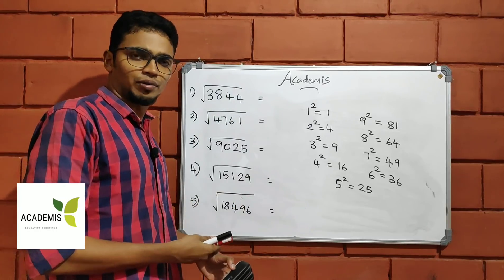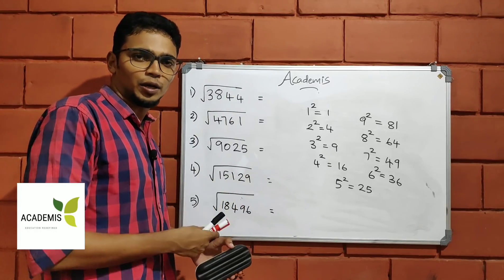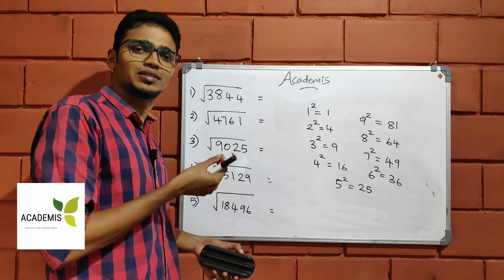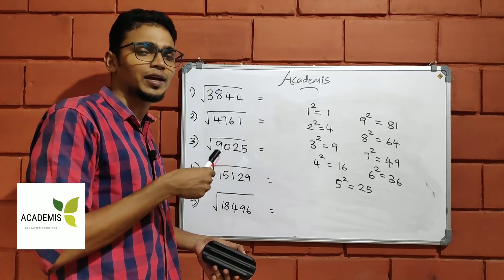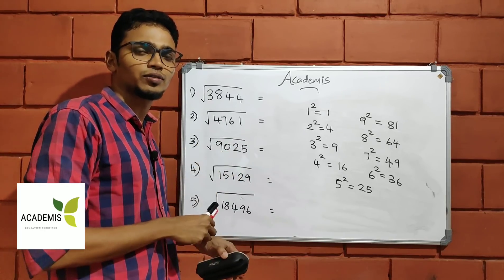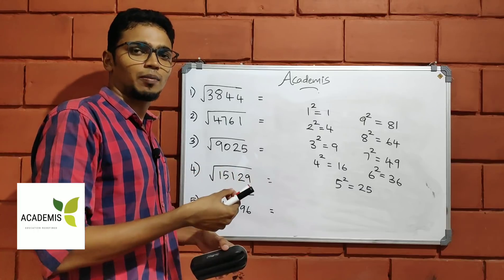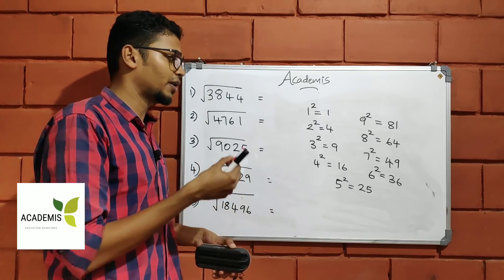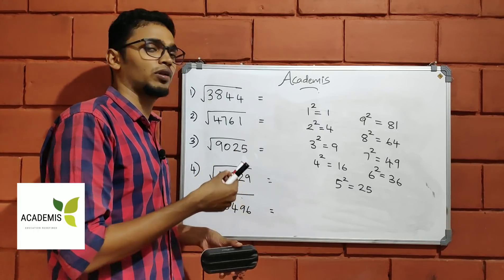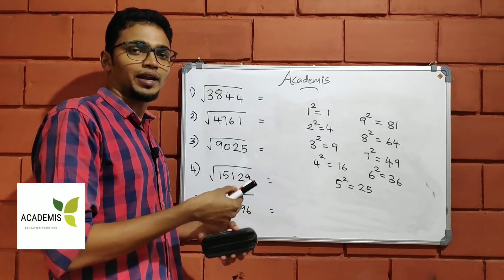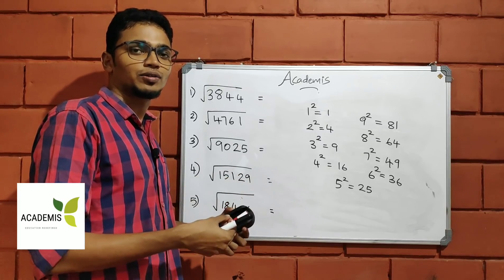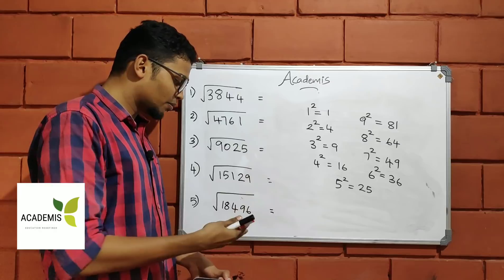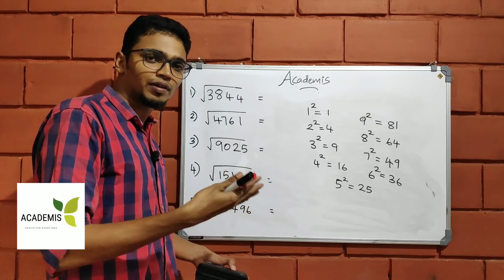Where do you find the square root easily? In 5 seconds or 3 seconds, where do you find the square root? It is very important. When I'm asking, we have called the square root of the number.